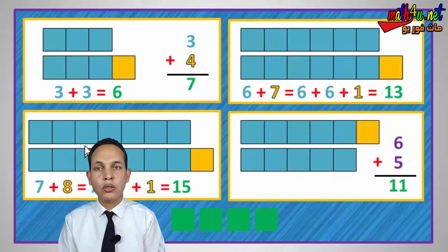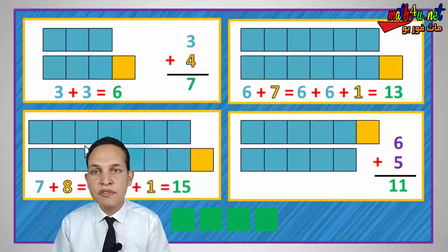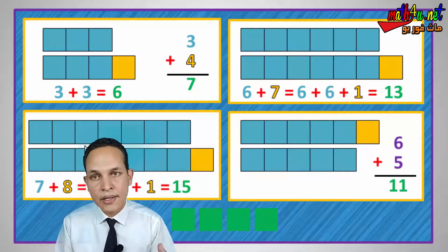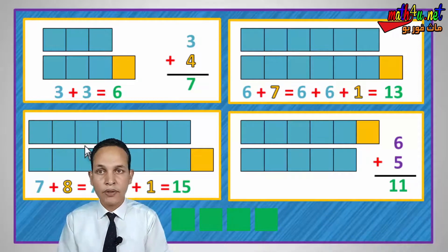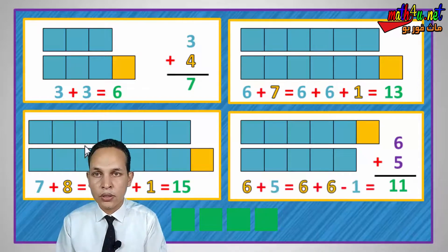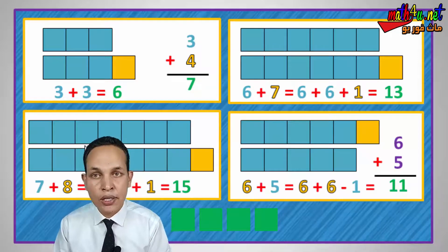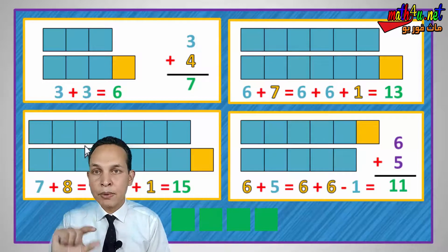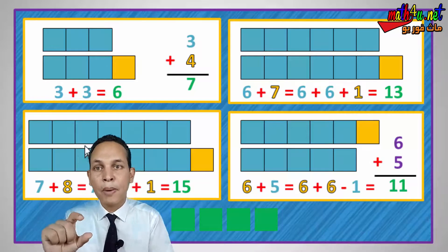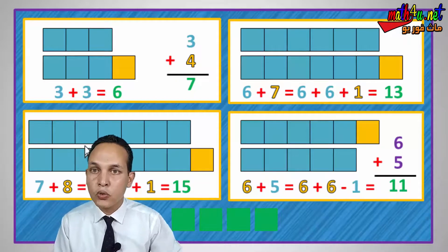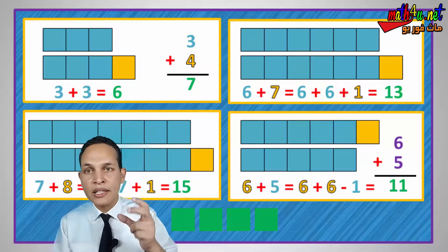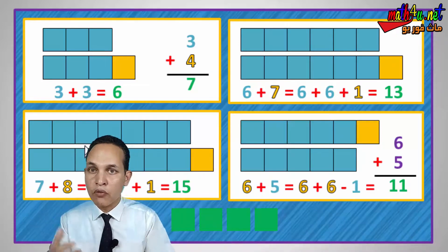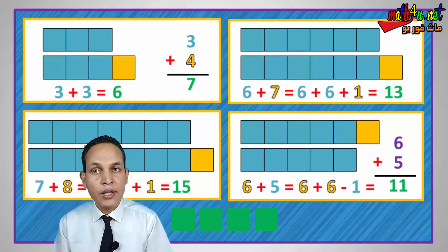If someone uses the bigger number, that's also fine, but let me explain. If you use six: six plus six equals twelve — that's the double of six. Then instead of plus one, you do minus one. Twelve minus one equals eleven — the same answer! So if you use the smaller number, it's double plus one. If you use the bigger number, it's double minus one. Either way you get eleven.